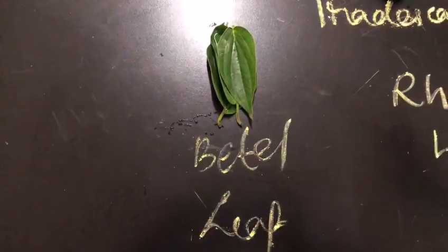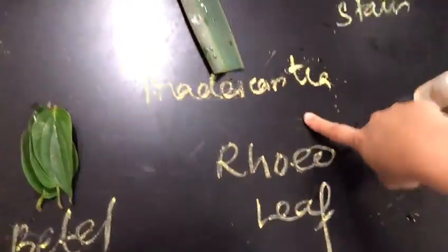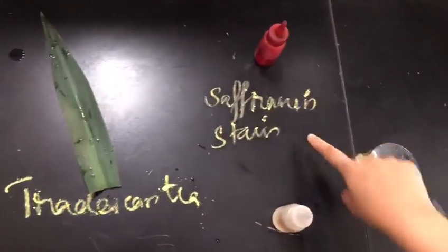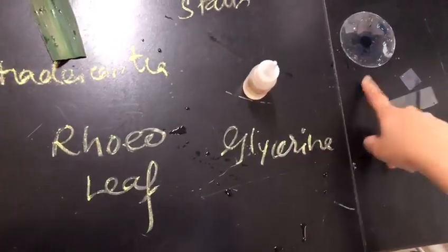The materials required are beetle leaf or rioleaf, saffron and stain, glycerin, watch glass, slide and cover slide.